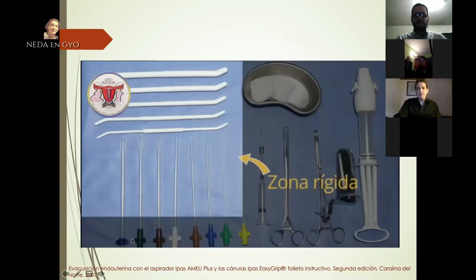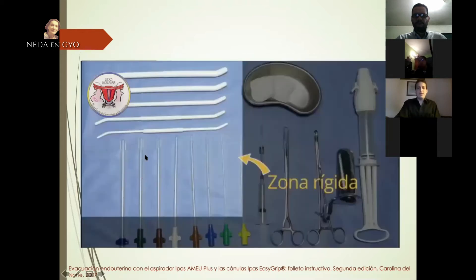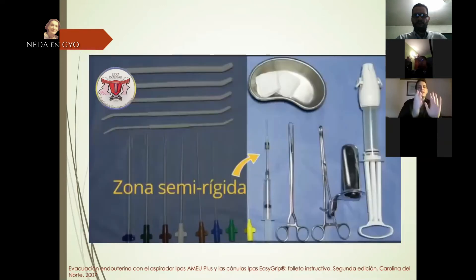Fuera de la zona rígida están los extremos base de las cánulas, que es por donde el cirujano toma la cánula y la introduce a nivel del cuello. Estas cánulas tienen la particularidad de que el borde cortante está en uno de los laterales y no en la punta; la punta es roma, y gracias a esto la tasa de perforaciones es mucho menor. Además, no hace falta el uso de un histerómetro, ya que la histerometría se puede realizar con estas cánulas. La zona semirrígida sí puede ser manipulada por el médico sin ningún problema, ya que no tiene contacto con la cavidad uterina.